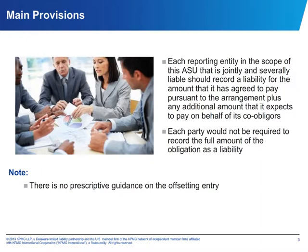However, judgment will be required in determining the additional amount an entity expects to pay. To assist users, the staff provided measurement guidance on what 'expects to pay' means: if some amount within a range that the entity expects to pay is a better estimate than any other amount, then that amount — the best estimate — should be used. If no amount within the range is a better estimate than any other amount, then the minimum amount in the range should be used. If you are thinking that this sounds similar to the measurement guidance for contingencies, you are correct — that is actually where the FASB received that language. However, it's important to remember that this is only from a measurement perspective, and not to confuse it with the recognition guidance for contingencies where a probable threshold is used.